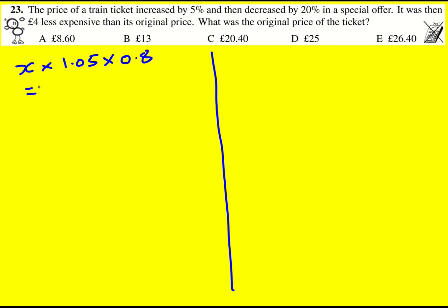And that is equal, that is then £4 less expensive than its original price. So it's going to be the original price minus 4. And I've created an equation.